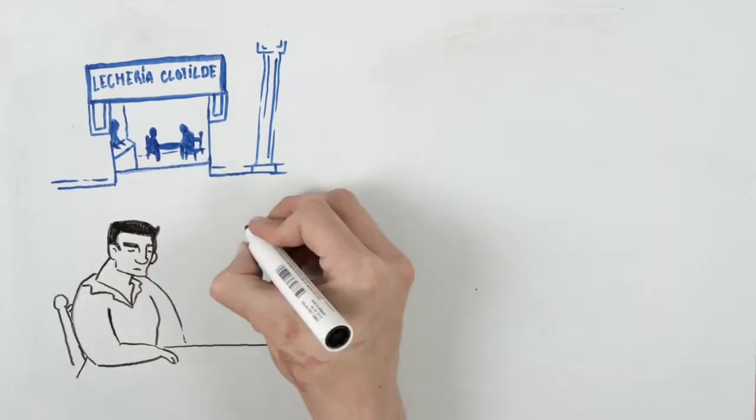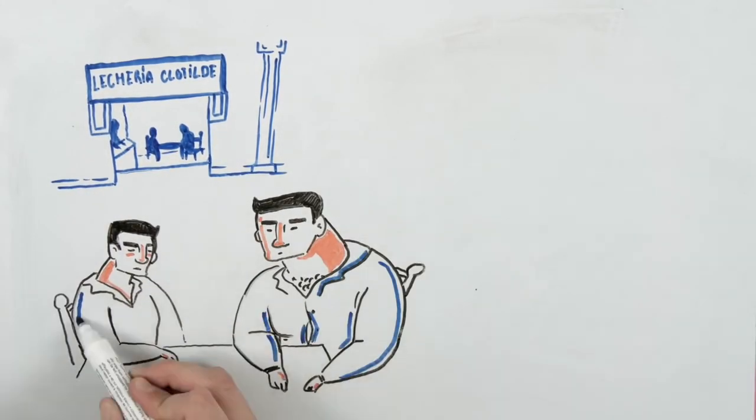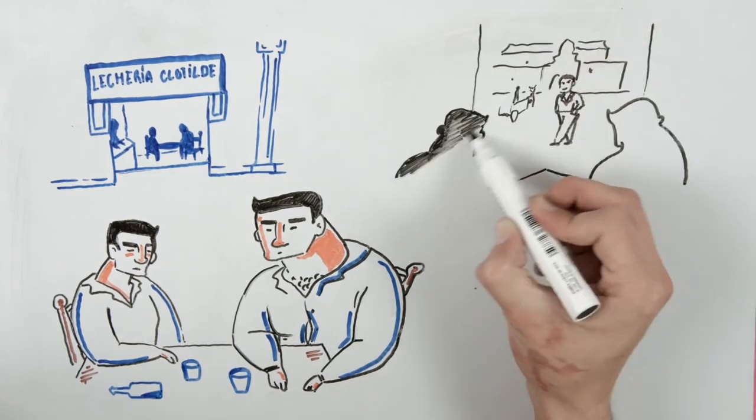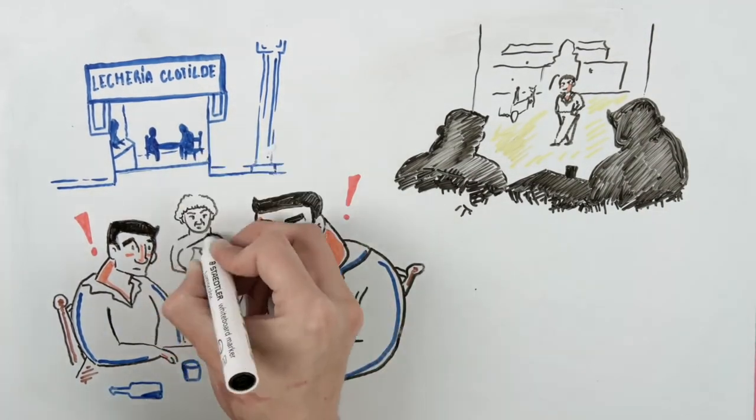At that time, only Clotilde Armenta's store was open. In it, the twins Pedro and Pablo Vicario were waiting, resting after three days of partying.